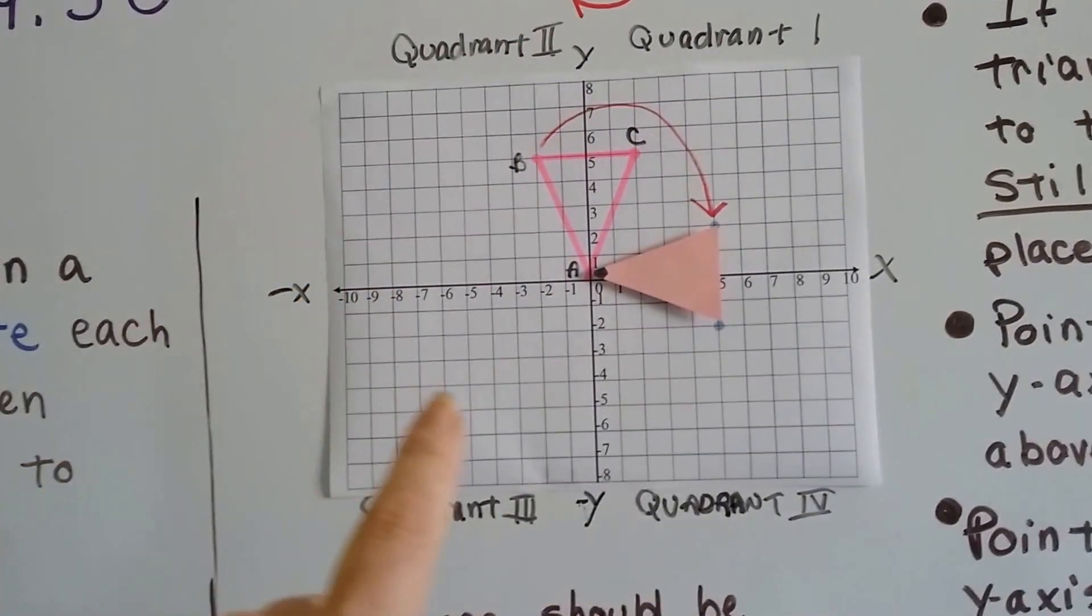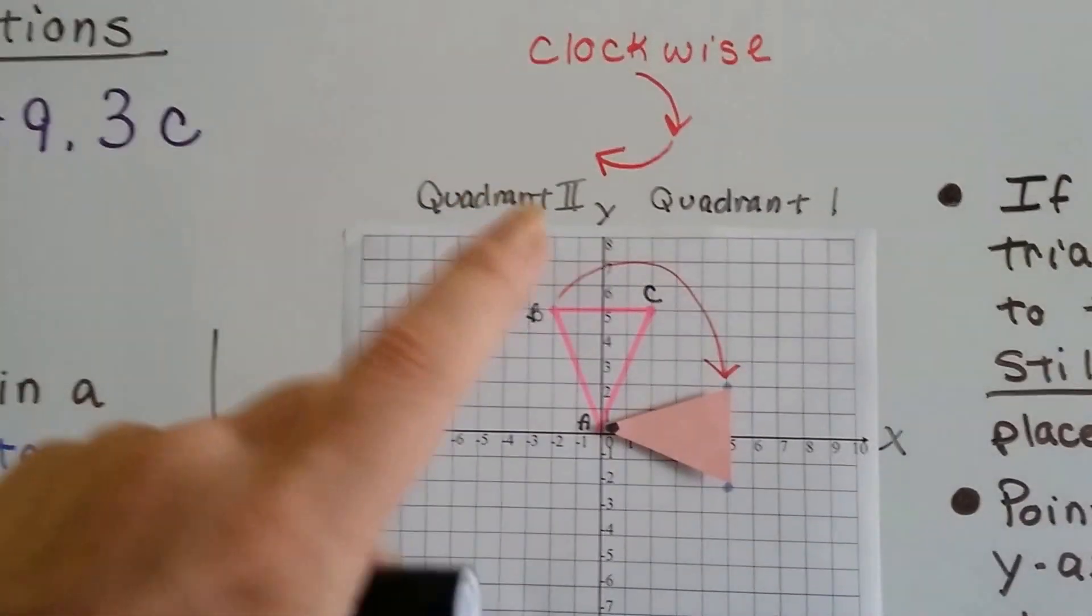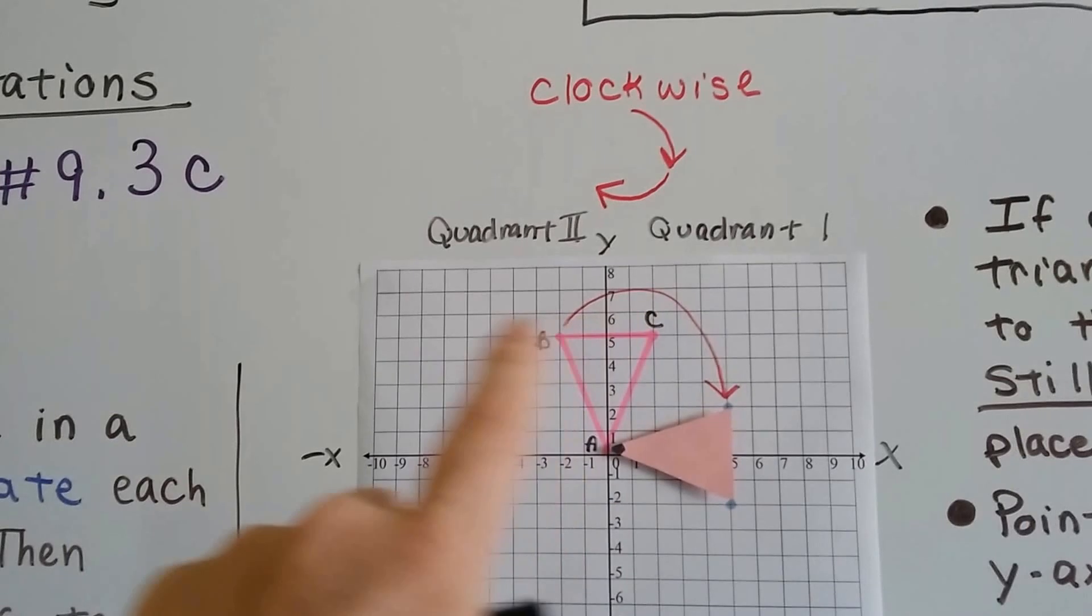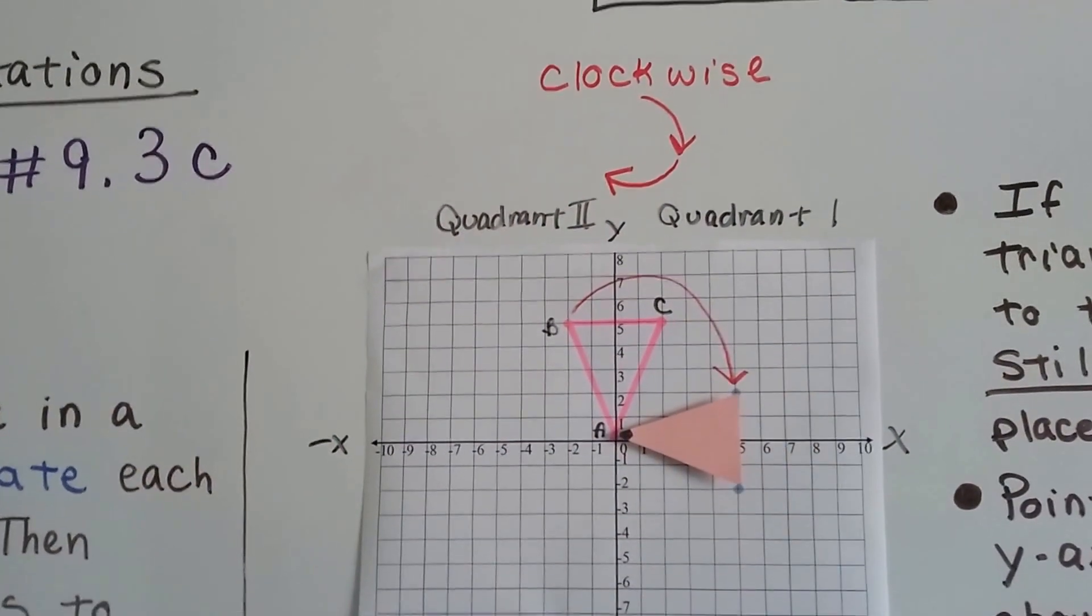So, that's quadrant one, quadrant two, quadrant three, quadrant four. We make the shape of the letter C. Now, we're going to go clockwise, and that's the direction the clock goes. It goes around towards the right. Counterclockwise would go this way to the left.